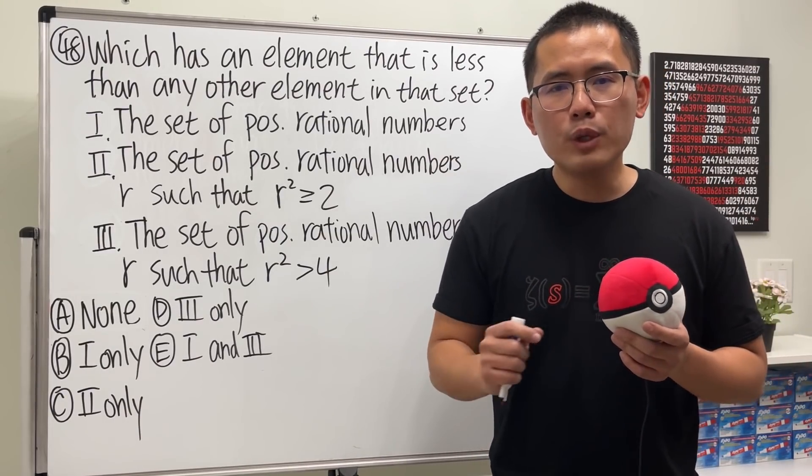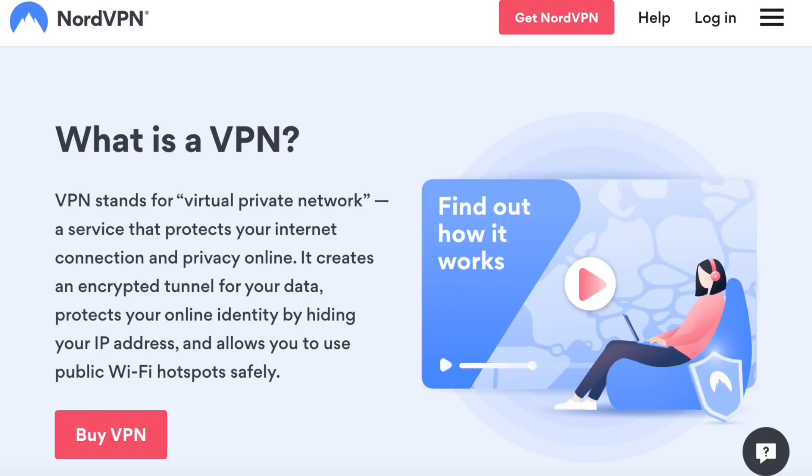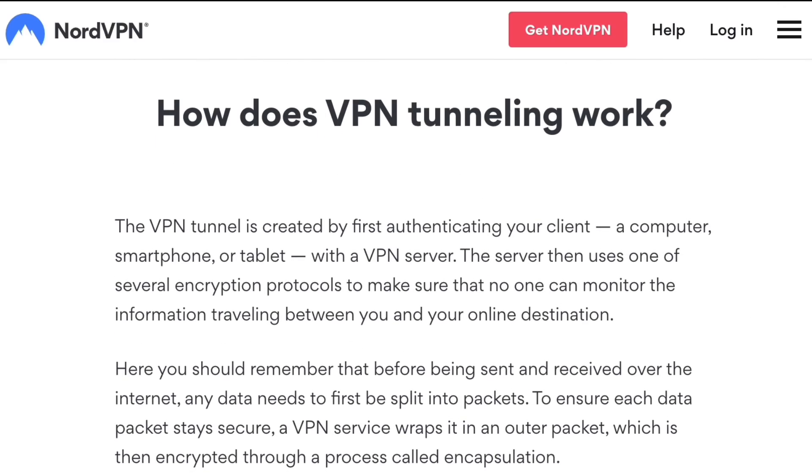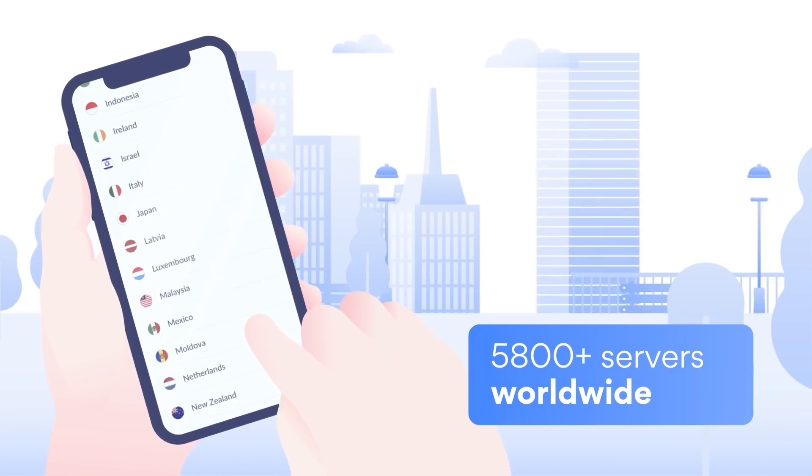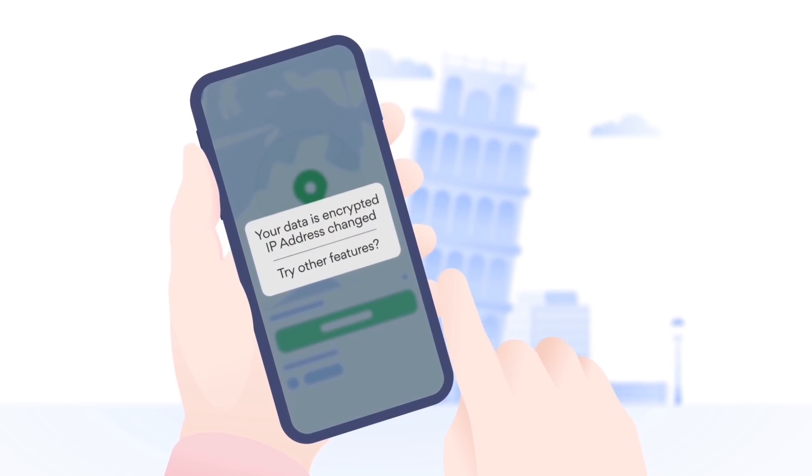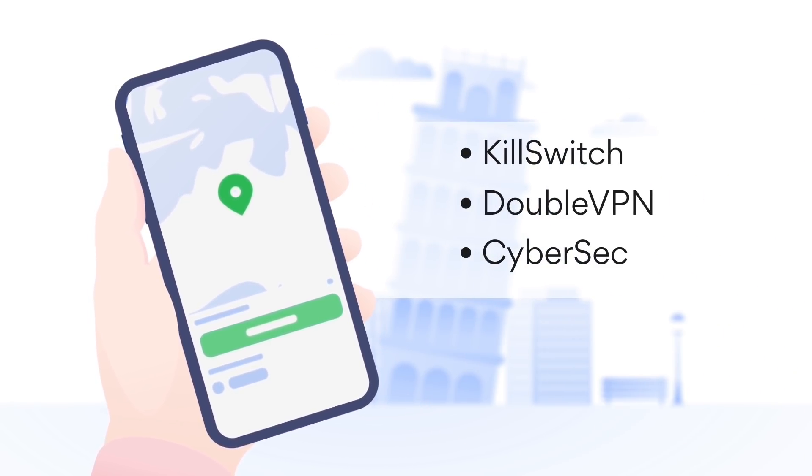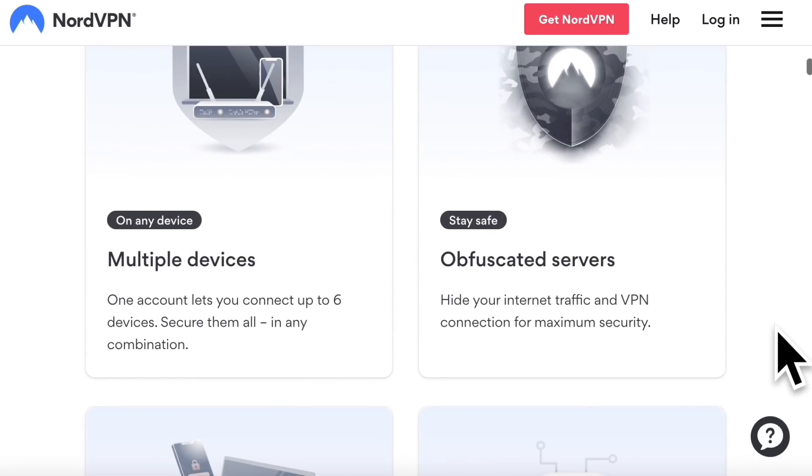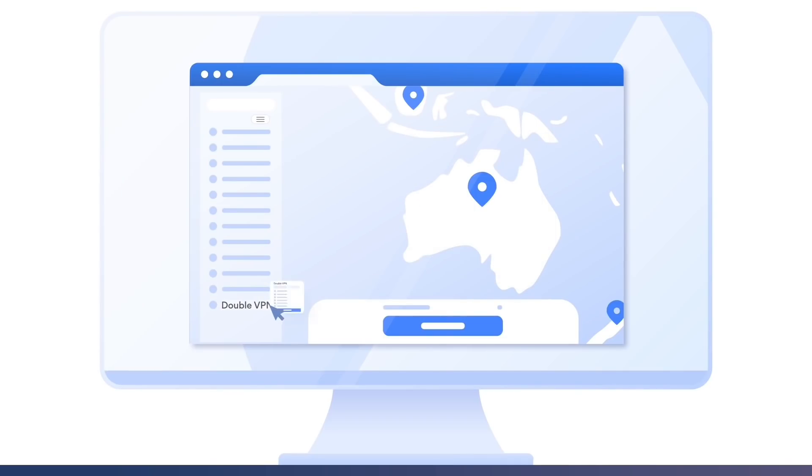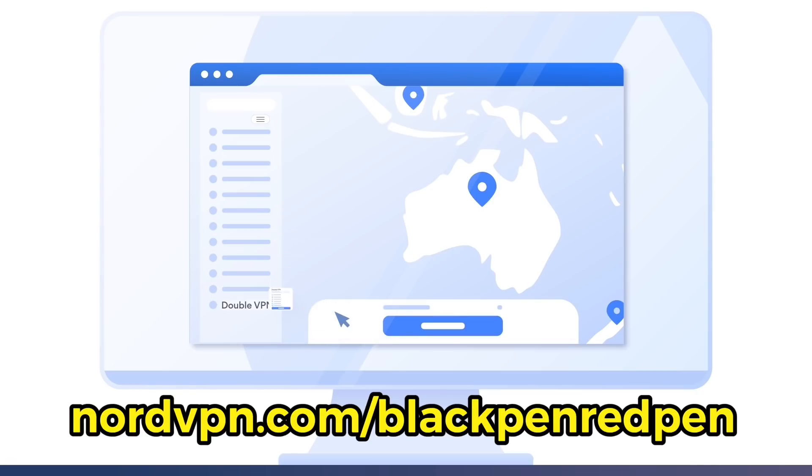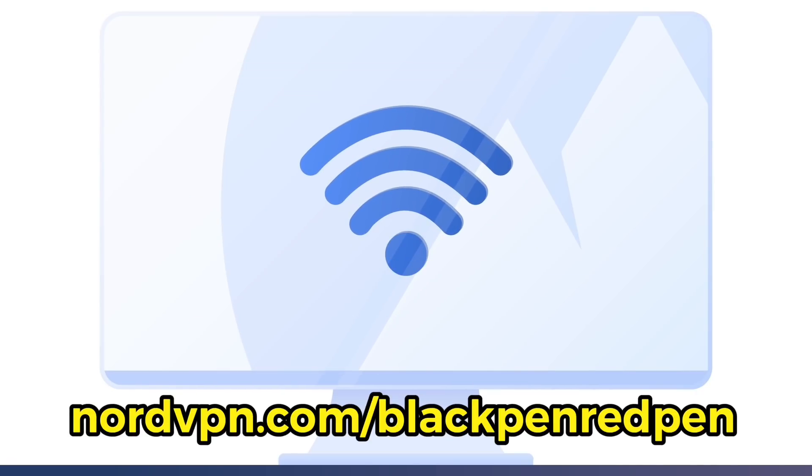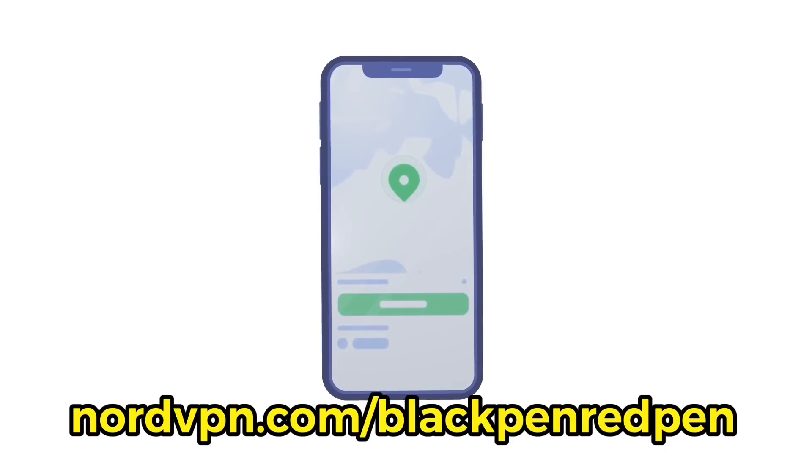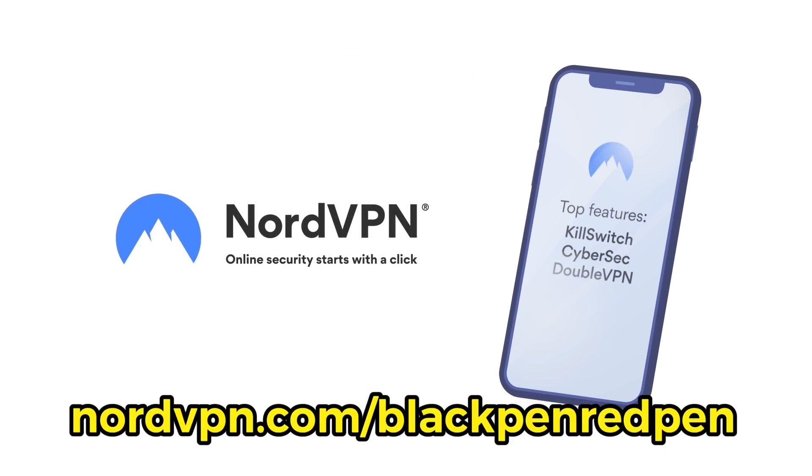Before we get into the answer, I would just like to thank NordVPN for sponsoring this video. First off, VPN stands for virtual private network and it's a service that protects your internet connection and privacy online. NordVPN is one of the best VPNs out there. It creates an encrypted tunnel for your data, protects your online identity by hiding your IP address, and it also allows you to use public Wi-Fi safely. Secondly, NordVPN servers are super fast so there is no sacrificing speed for security. The best part is if you use the link in the description nordvpn.com/blackpenredpen, you will actually get a huge discount on a two-year plan and if you use my code blackpenredpen, you can also get an additional month for free.